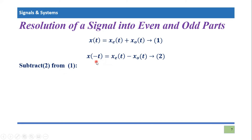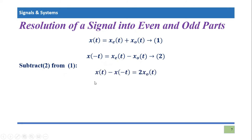x(t) - x(-t): the even part terms get subtracted and cancel out, and the odd part terms sum up because minus minus becomes plus. So the final simplified equation will be x(t) - x(-t) = 2·x_o(t).